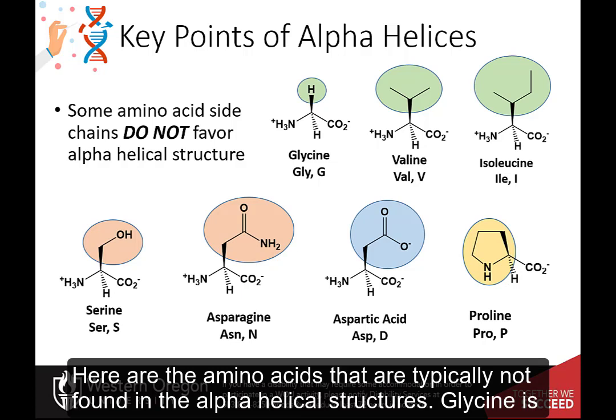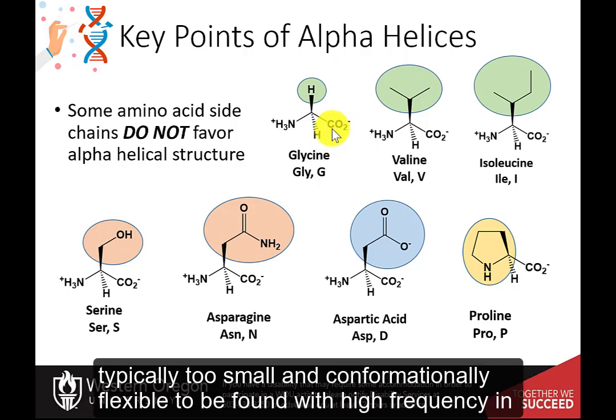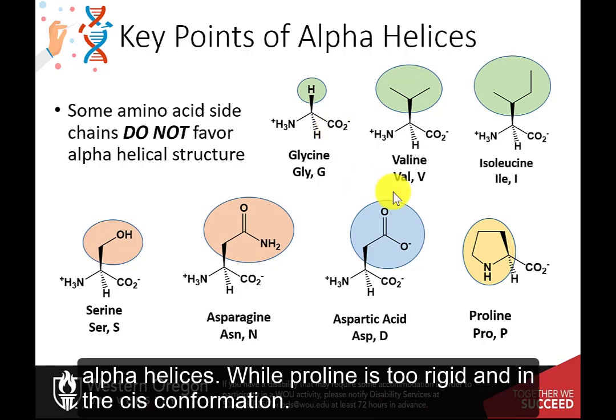Some amino acids are more commonly found in alpha helices than others. Here are the amino acids that are typically not found in alpha helical structures. Glycine is typically too small and conformationally flexible to be found with high frequency in alpha helices, while proline is too rigid and in the cis conformation.